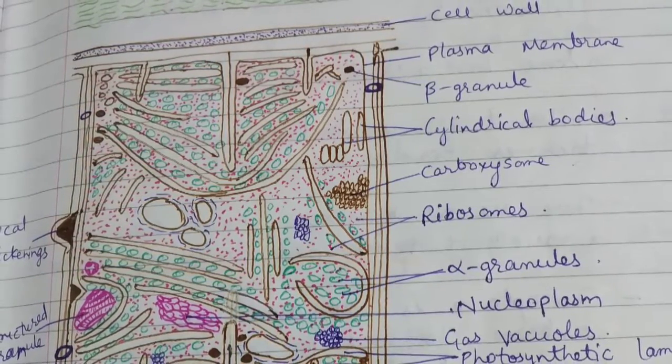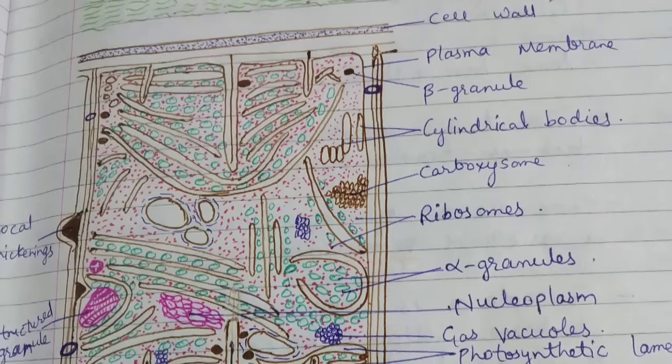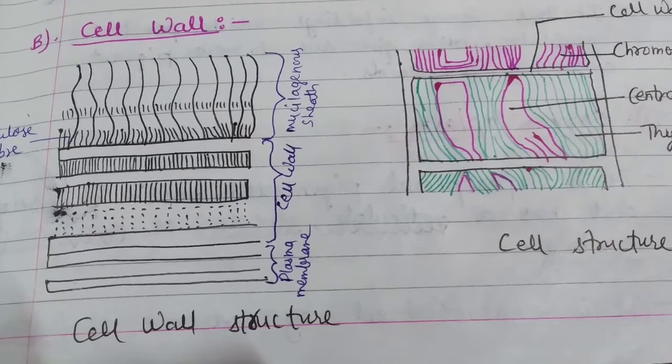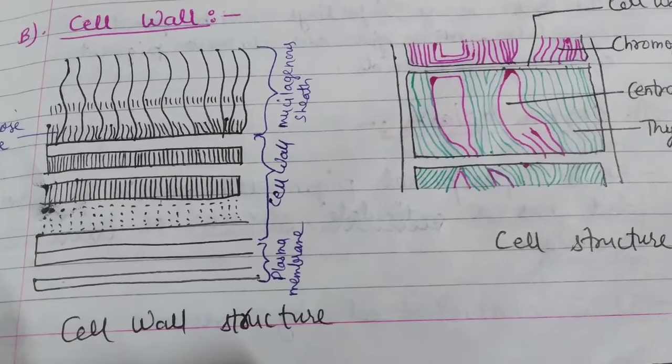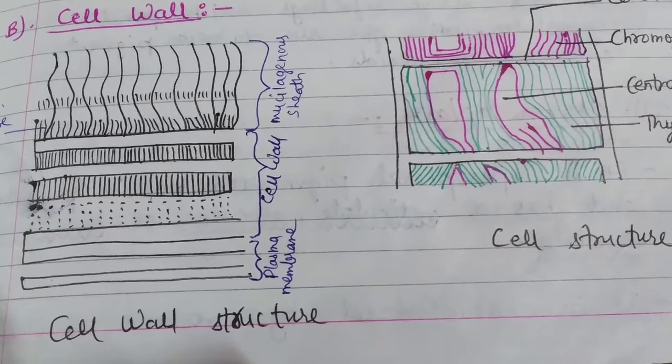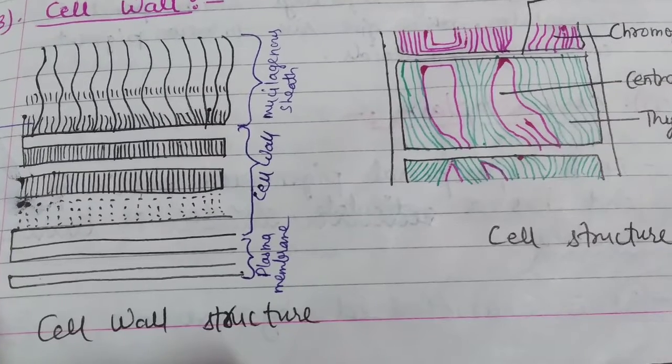Next structure is chromatoplasm which is peripheral pigmented portion of protoplast and has a reticulate, alveolar or homogeneous structure.